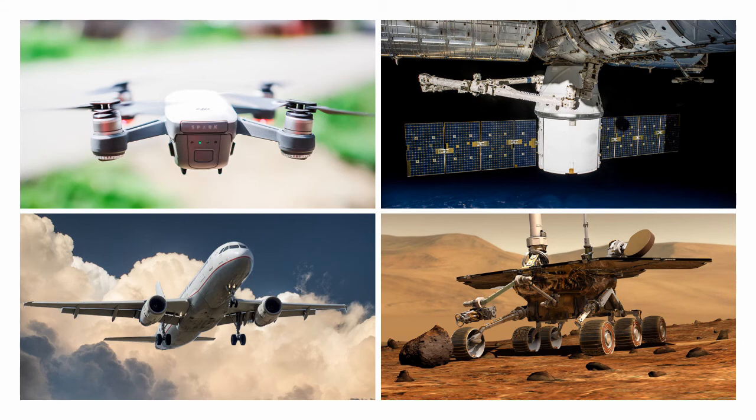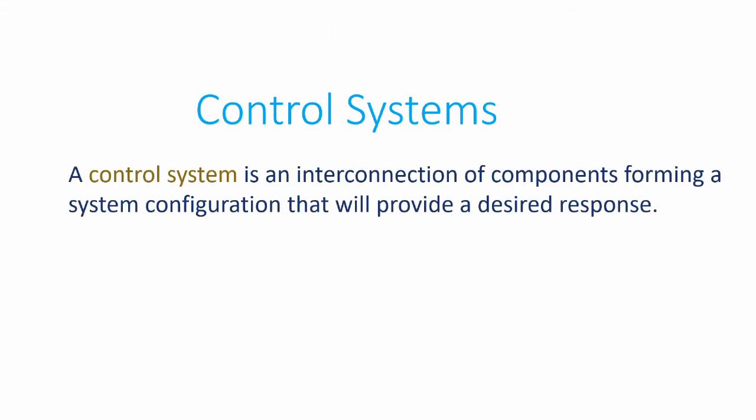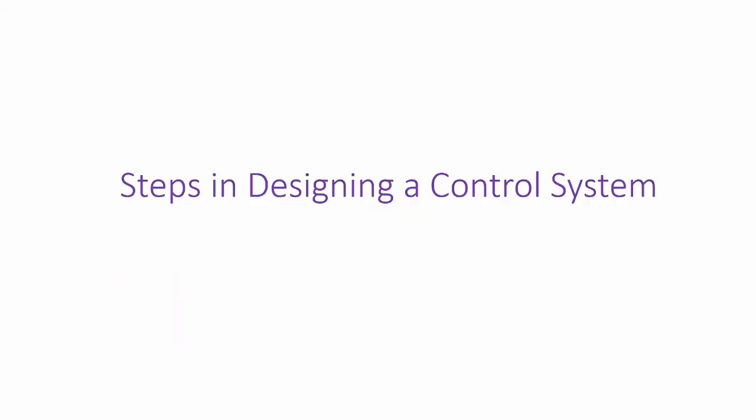So now we can finally define the control system. A control system is an interconnection of components forming a system configuration that will provide a desired response. The different components in a control system are plant, controller, actuator, sensor, etc.